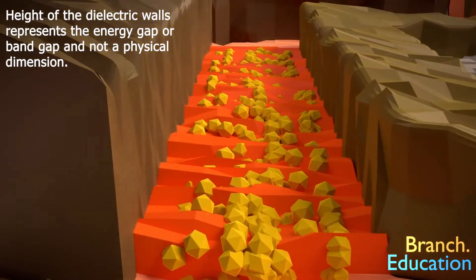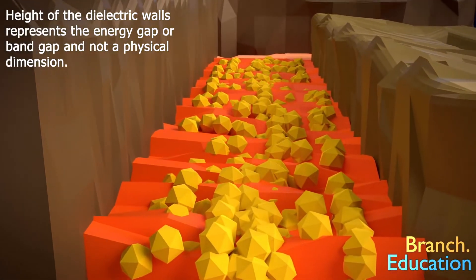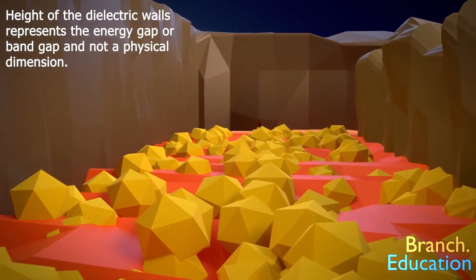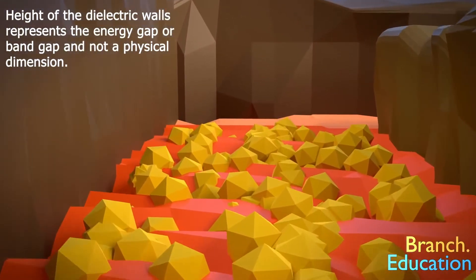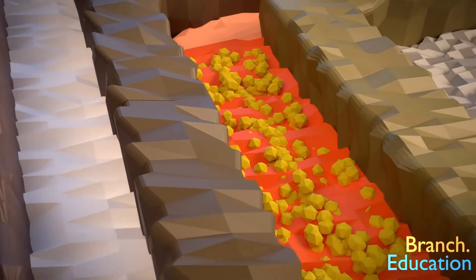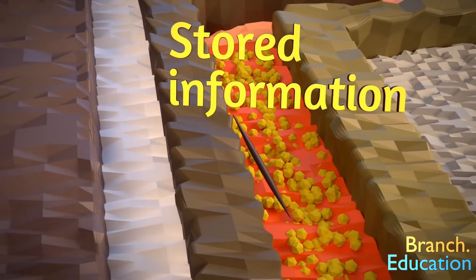When electrons, shown in yellow, move into that valley, they get stuck there and cannot leave and stay there for years. This is the basic idea of how your smartphone stores information.